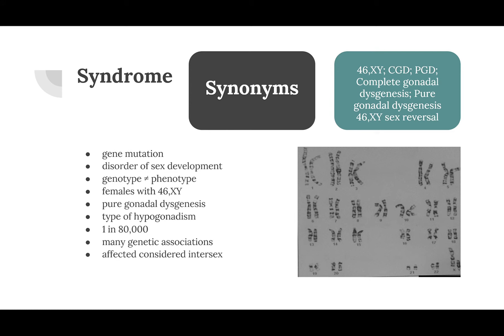What Swire syndrome specifically does is the following: it's a gene mutation and a disorder of sex development where the genotype does not match the phenotype. So we have females with 46 XY chromosomes. This is called pure gonadal dysgenesis — a non-formation of the gonads or sex glands. It's also a type of hypogonadism, meaning diminished functional activity of the gonads. It occurs in one in 80,000 people, making it a relatively rare disease. There are many genetic associations and causes for the occurrence of this genotype-phenotype situation.